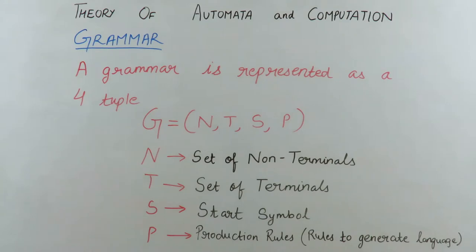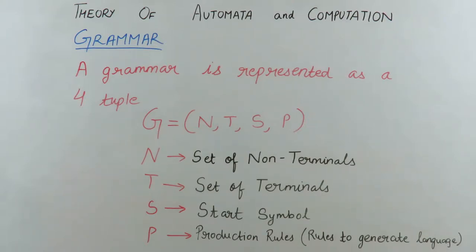We are going to discuss the fourth main entity of theory of automata and computation: grammar. Before studying this topic, I recommend you go through our previous two videos to get your concepts clear about alphabet, string, and languages. The fourth important entity is grammar, and grammar is the code behind thing — grammar is responsible for the generation of any language from any alphabet set.